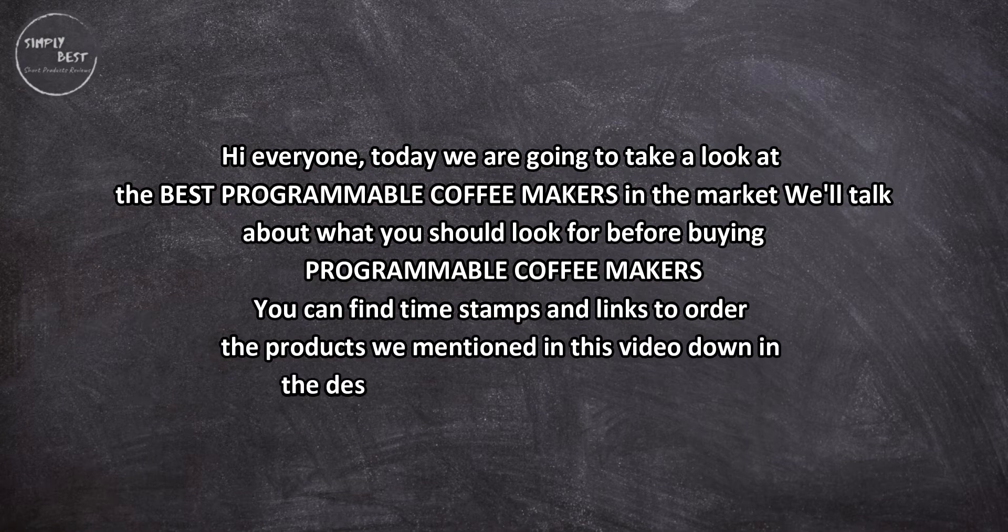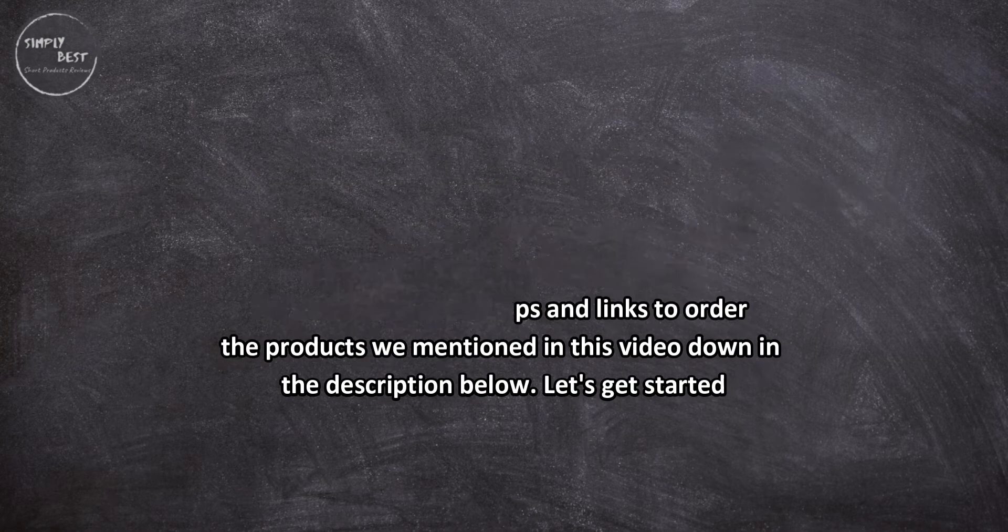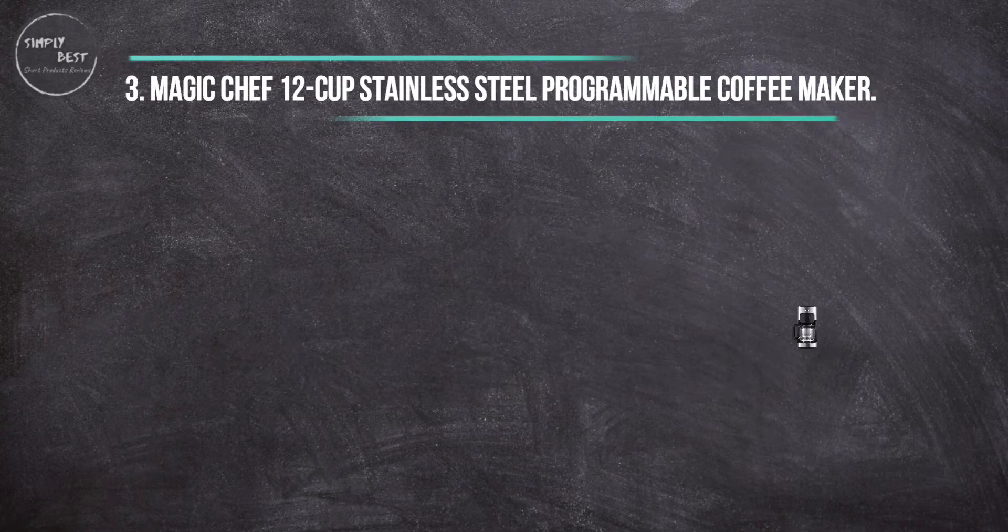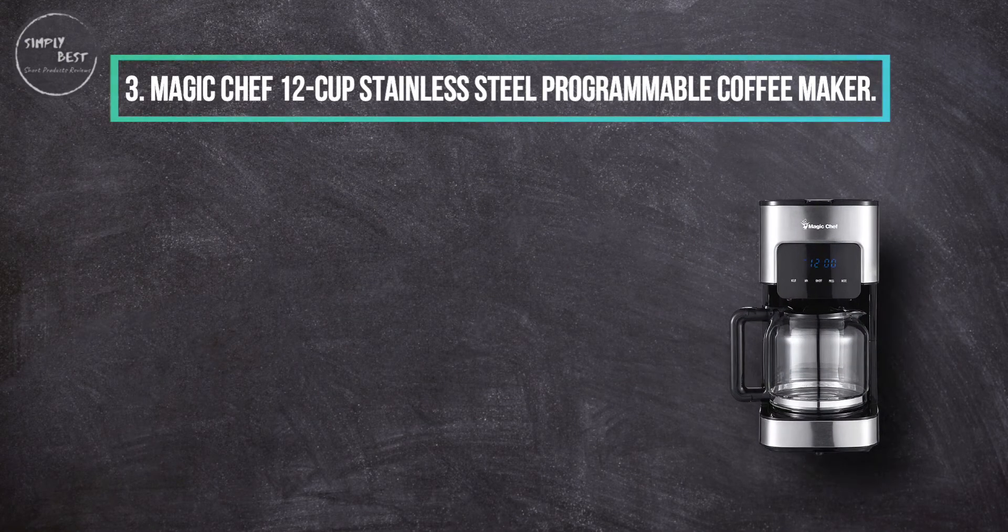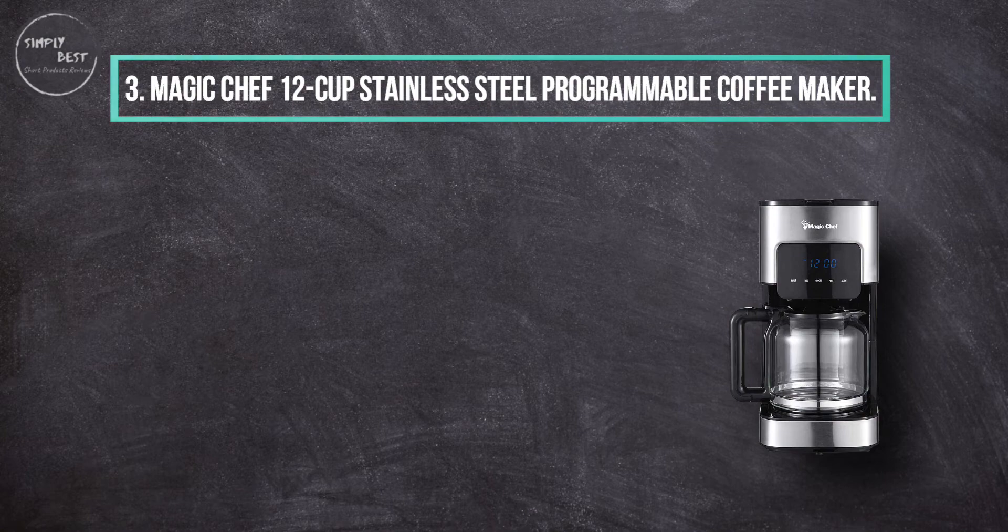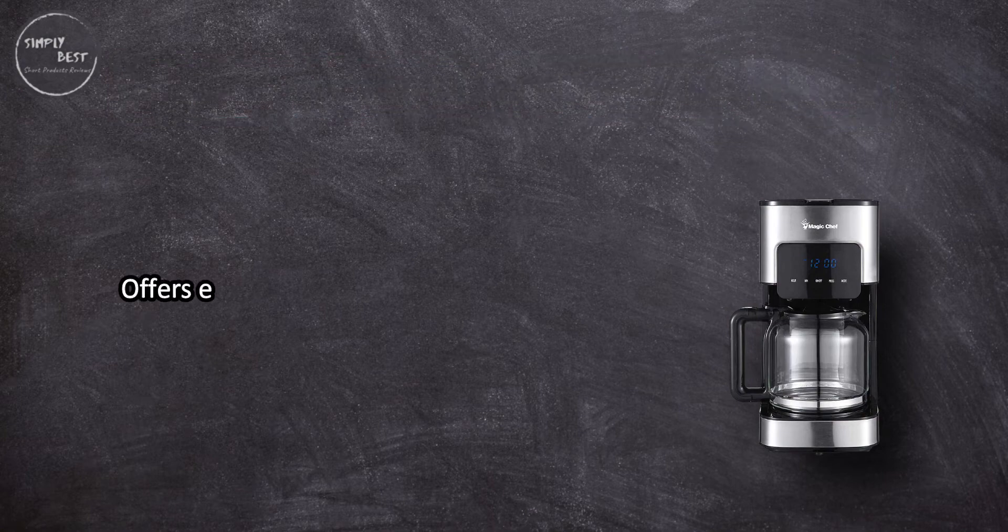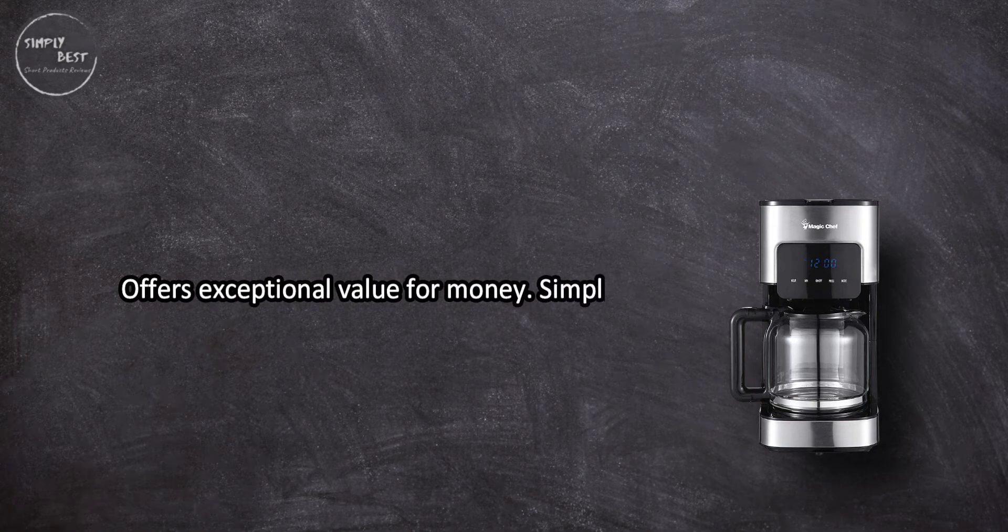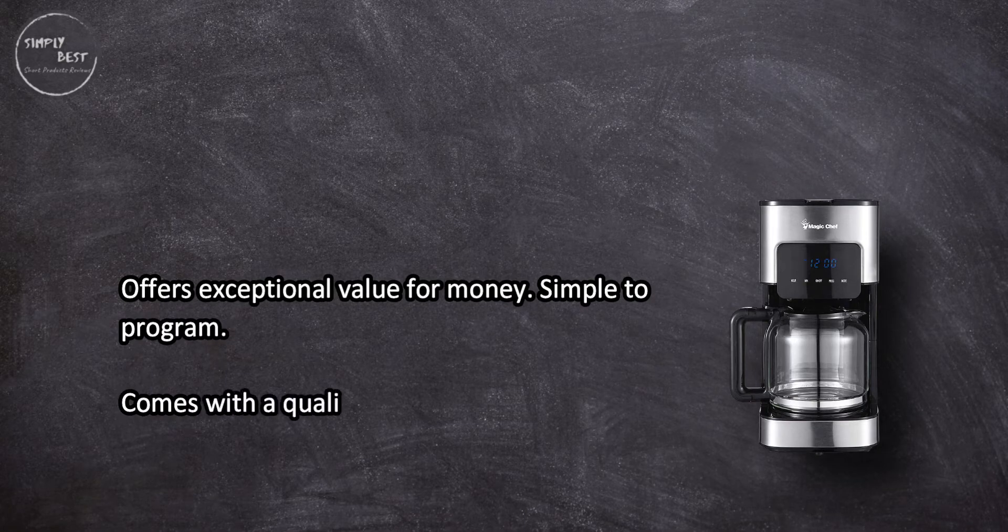To order the products we mentioned in this video, check the description below. Let's get started. At number 3: Magic Chef 12 Cup Stainless Steel Programmable Coffee Maker offers exceptional value for money. Simple to program, comes with a quality carafe plus a reusable filter so you don't have to buy the wasteful paper kind.